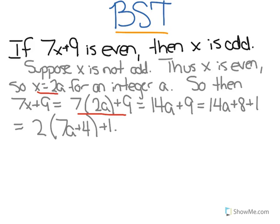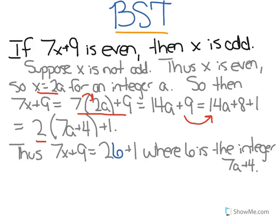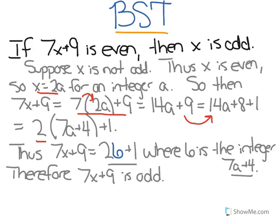That equals 14a plus 9, if you distribute the 7. And 14a plus 9 is equivalent to 14a plus 8 plus 1. We want to get that 1 out of there, because then we can factor a 2 out of 14a plus 8, and get 2 times (7a plus 4) plus 1. Thus, 7x plus 9 really equals 2b plus 1, because b can just be represented by the integer 7a plus 4. Therefore, 7x plus 9 is odd by the definition of an odd number, because an odd number is 2 times an integer plus 1.